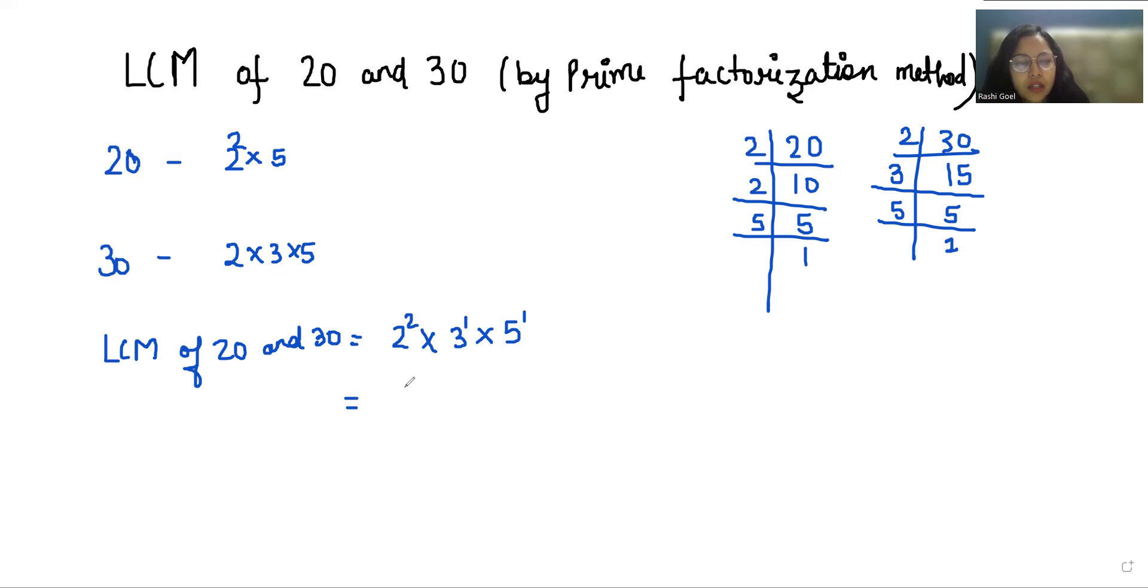Now 2 square is 4 times 3 times 5. 4 times 3 is 12 times 5, that is 60. So LCM of 20 and 30 is 60. I hope it's clear and you find it useful, so please